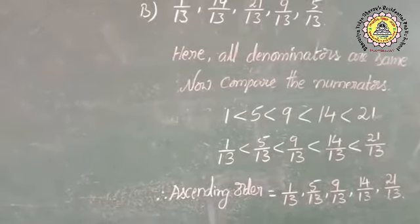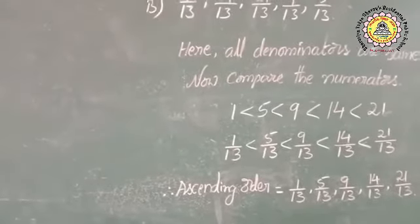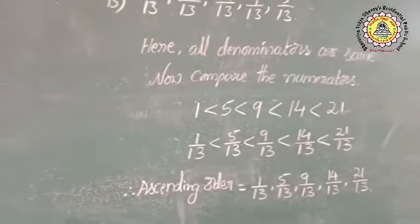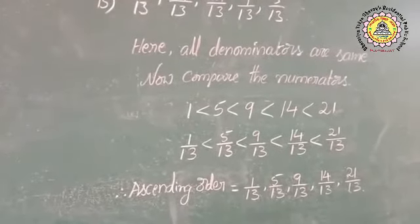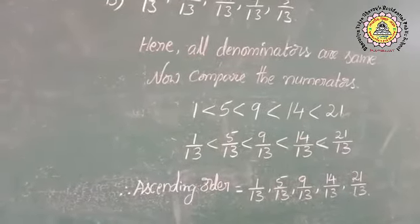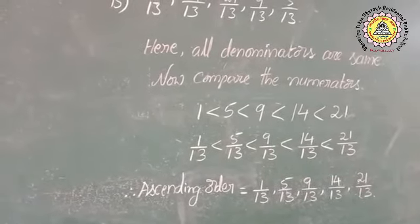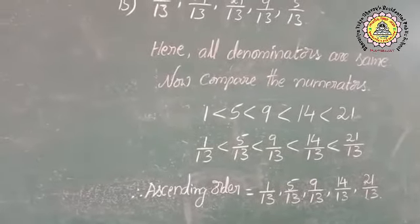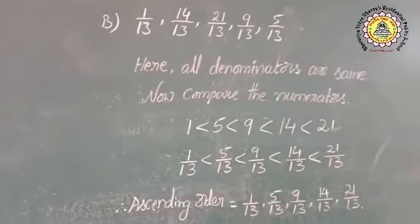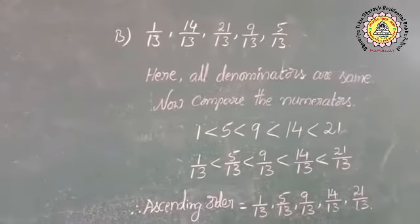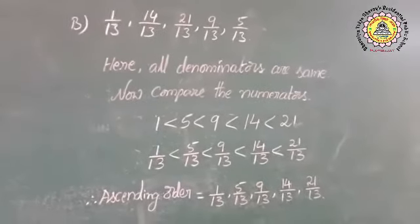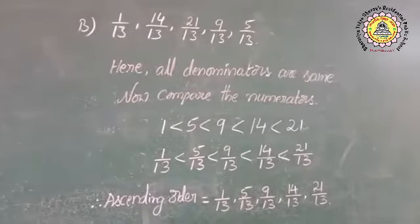All fractions follow: 1 by 13 is less than 5 by 13 is less than 9 by 13 is less than 14 by 13 is less than 21 by 13. Therefore, ascending order equals: 1 by 13, 5 by 13, 9 by 13, 14 by 13, and 21 by 13. This is our ascending order for the given fractions.